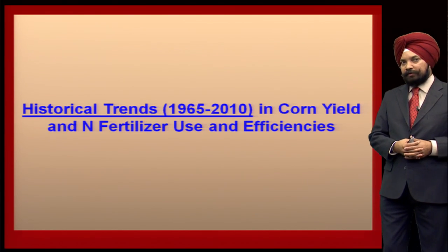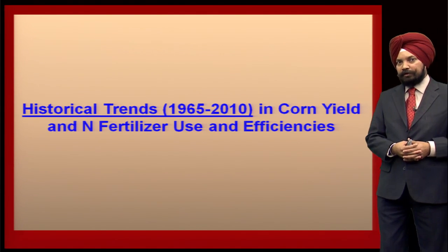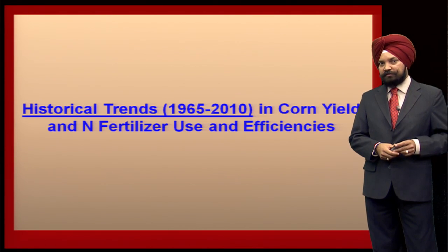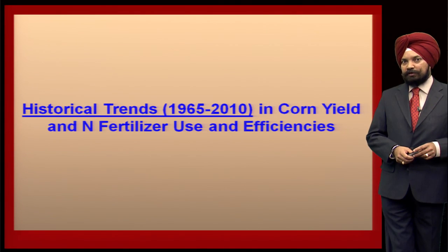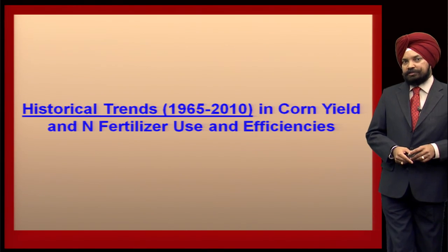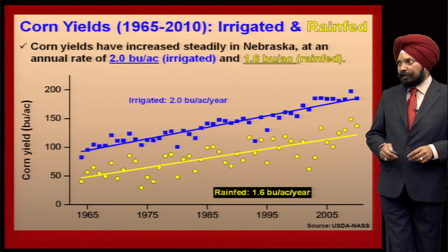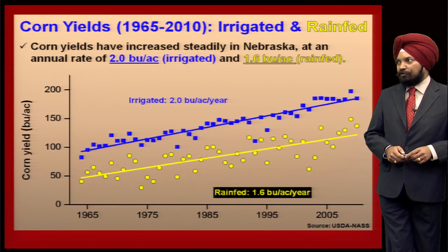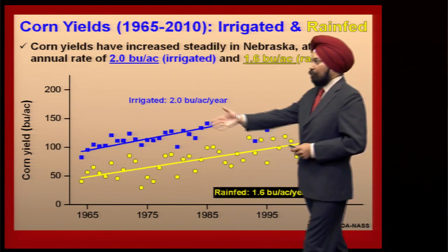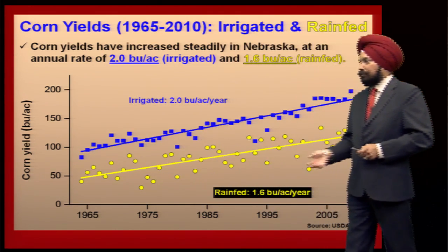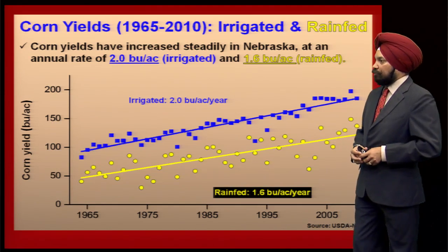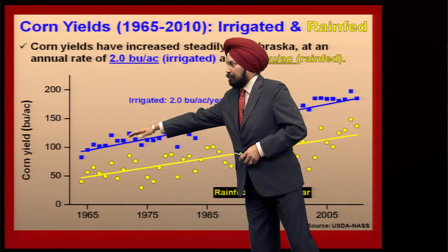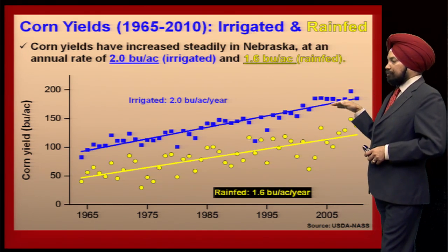In the next few slides I will be showing some trends about corn yield, nitrogen fertilizer, and use efficiencies. These are historical trends from 1965 to 2010, and data have been collected from the national agency USDA/NASS. In the first slide I am showing yellow dots for rain-fed fields and blue dots for irrigated fields. On the y-axis we have corn yield and on the x-axis a time scale. We can see that in 1965 farmers were achieving irrigated corn yield around 100 bushels per acre and now in 2010 they are achieving around 200 bushels per acre.